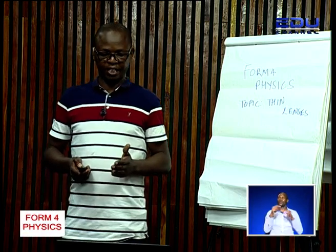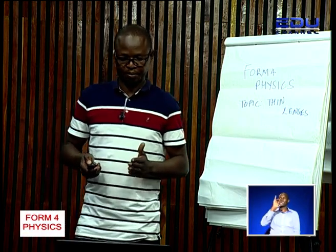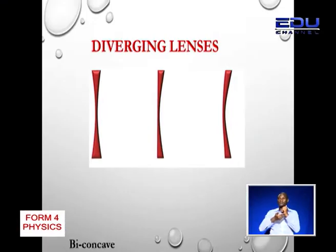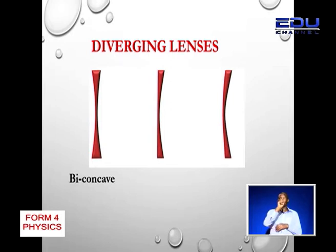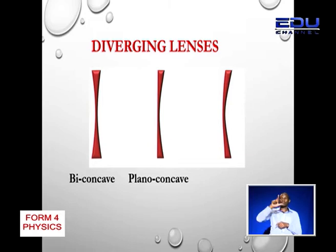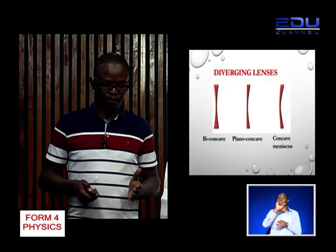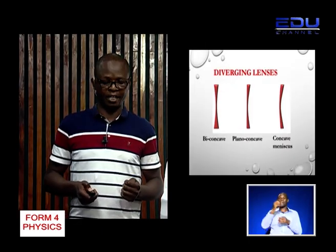The other group is the diverging lenses. In the diverging lenses, we have: one, the biconcave lens; then the second one, we have the planoconcave lens; and the third one is the concave meniscus. So, these lenses are the ones that diverge a parallel beam of light.